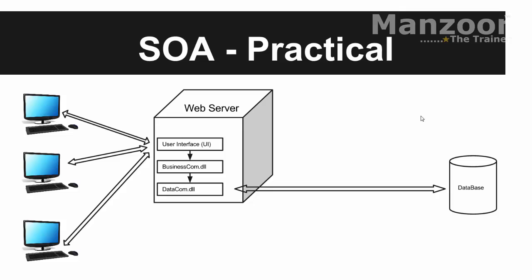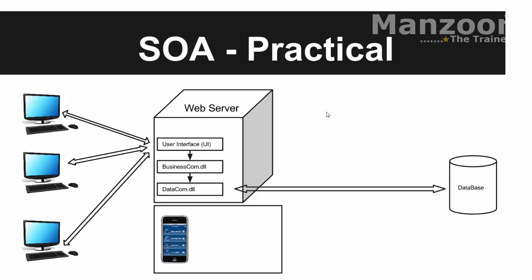Now say I want to develop a mobile application with the same concept. Just like Gmail — I have a Gmail web application, and I can also view the same emails on my Android mobile. So I want to develop the same on mobile. For a mobile app I need a different UI, but my business component and data component remain the same. So I need to make a copy of the business component and data component.